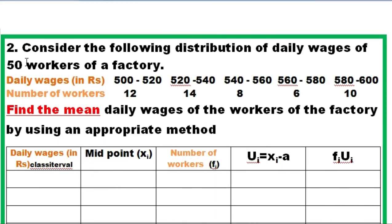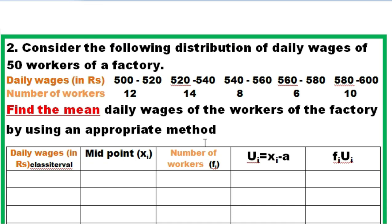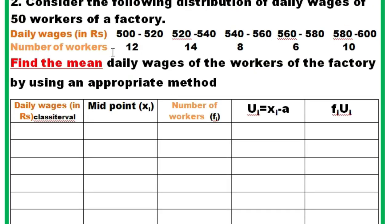The question is: consider the following distribution of daily wages of 50 workers of a factory. The table is given like this: 500 to 520 is 12, 520 to 540 is 14, 540 to 560 is 8, and so on. We have to find the mean daily wages of the workers of the factory by using an appropriate method.